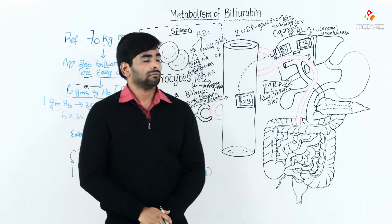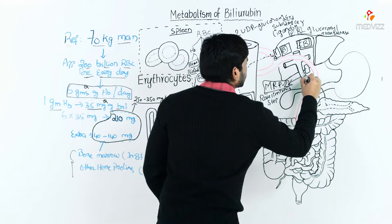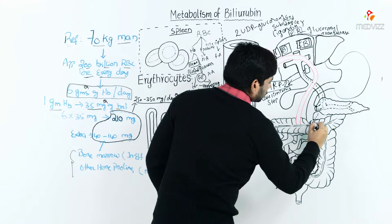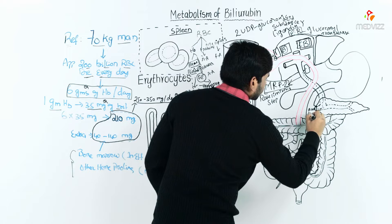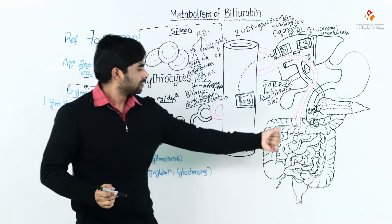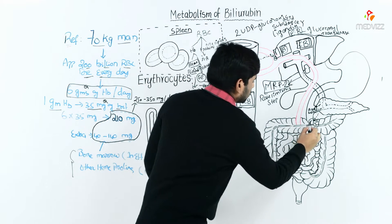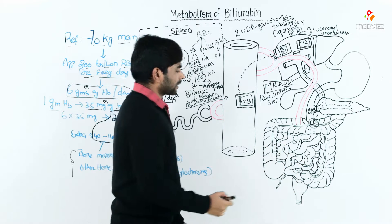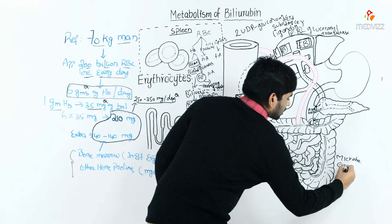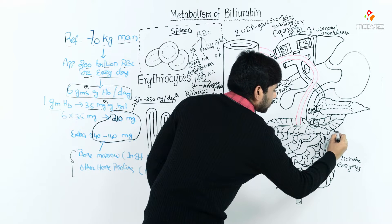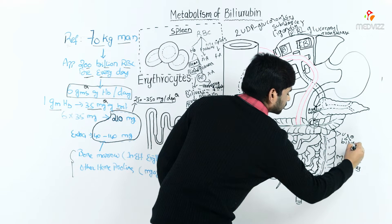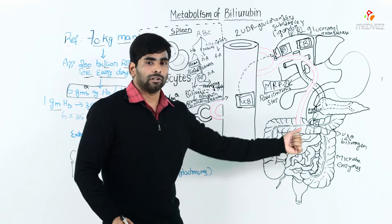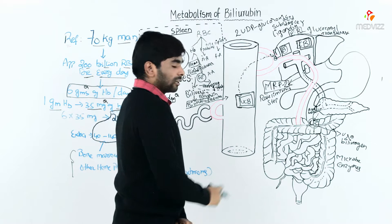Once in the biliary system, conjugated bilirubin travels along with bile into the GIT through the ampulla of Vater. It travels from the small intestine into the large intestine, where with the help of special microbes and enzymes, conjugated bilirubin is converted into urobilinogen. This urobilinogen is now our final form of bilirubin in the gut.